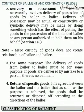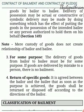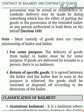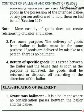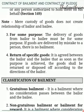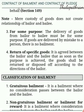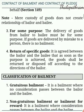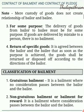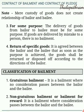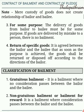Third, For some purpose: The delivery of goods from bailor to bailee must be for some purpose. If goods are delivered by mistake to a person, there is no bailment. Fourth, Return of Specific Goods: It is agreed between the bailor and the bailee that as soon as the purpose is achieved, the goods shall be returned or disposed of according to the directions of the bailor.